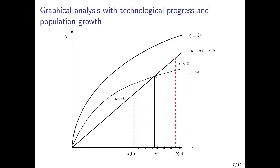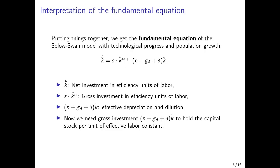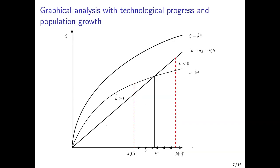At the steady state, capital per unit of effective labor no longer accumulates. If we start to the left of the steady state with a capital stock K-zero lower than the steady state, gross investment exceeds capital dilution and depreciation, so capital accumulates and we converge to the steady state from below. This is analogous to the version without technological progress: a country that experienced a disaster or war and had its capital stock destroyed will accumulate capital per unit of effective labor at a faster pace if it is farther from its steady state.